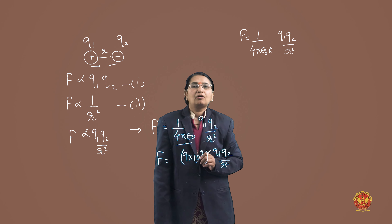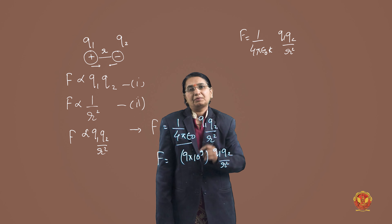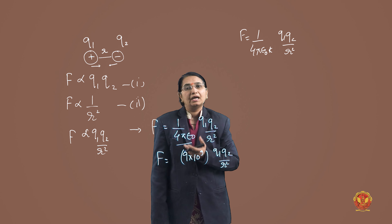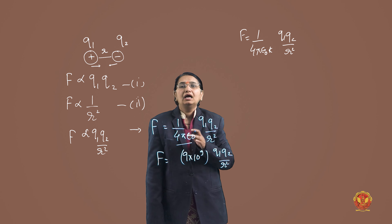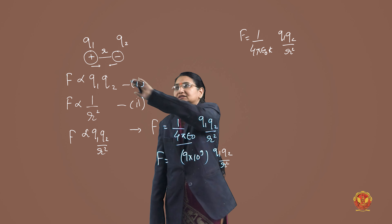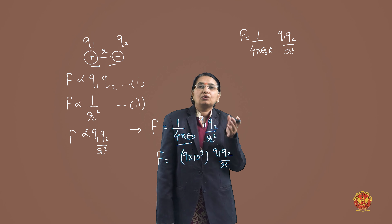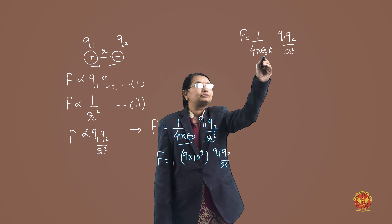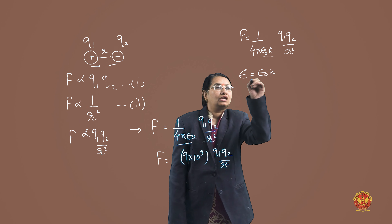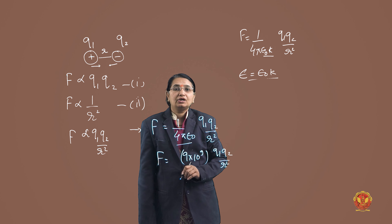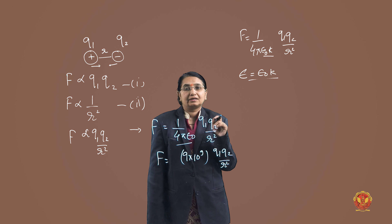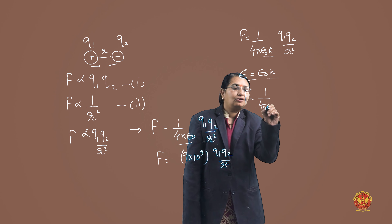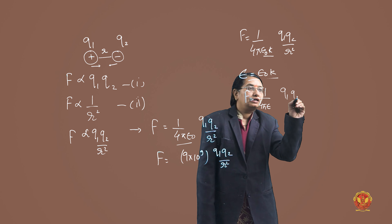So what is the value of ε₀? We talked about permittivity. And what is k? K is the dielectric constant of the medium — for example, the value for glass, wax, or oil. Whichever medium is placed between the two charges, we use its k value. We can write ε₀·k as ε, where ε is called the permittivity of the dielectric. So the formula becomes F = (1 / 4π·ε) · (Q1·Q2 / R²).